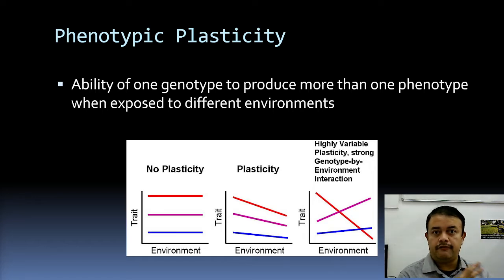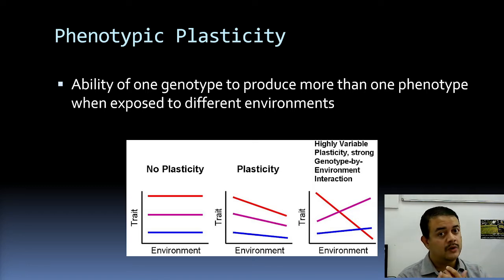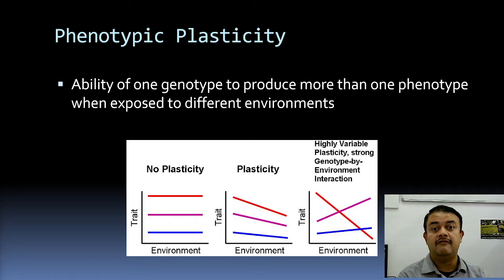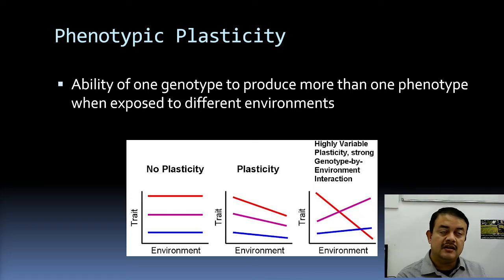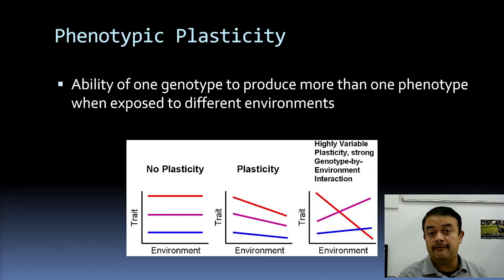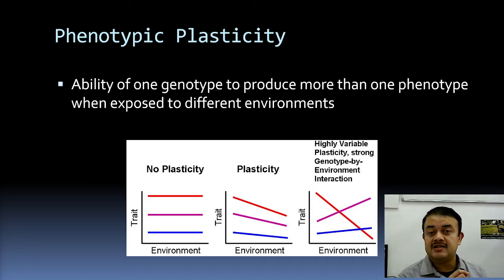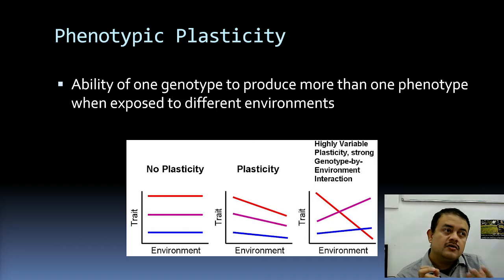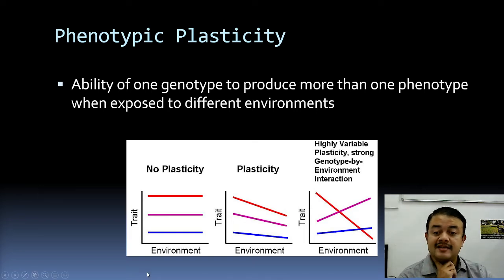Phenotypic plasticity is very common in stationary organisms like plants and algae. The same species of algae growing in a sheltered environment with little wave action will differ from the same genotype growing where there is heavy wave action, or where there are no herbivores compared to areas with sea urchins or crabs. The microbiome — bacteria associated with algae or seaweeds — can also have morphogenetic inducers, inducing shifts from one morphotype to another.